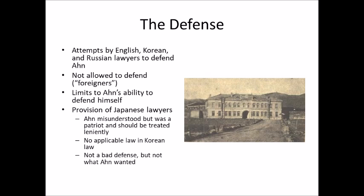There were attempts by English, Korean, and Russian lawyers — hired by different groups — to defend Ahn, but they were not allowed to do so because they were foreigners, and Japanese law did not allow foreigners to serve as defense counsel.